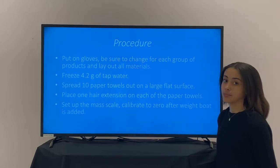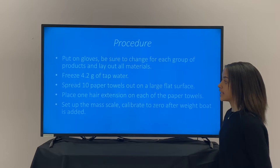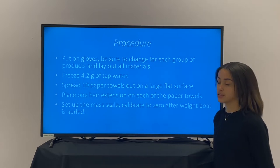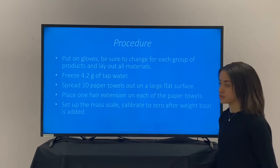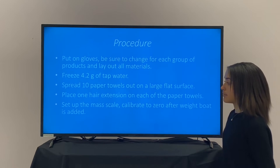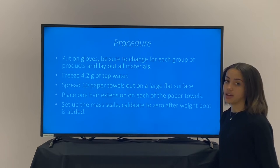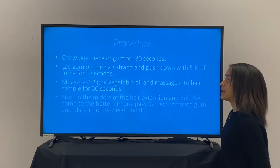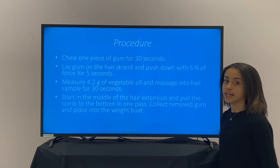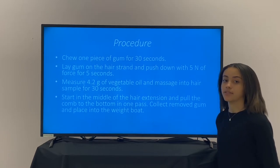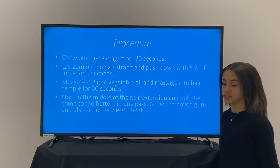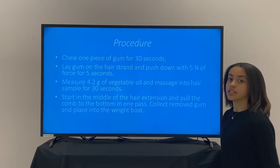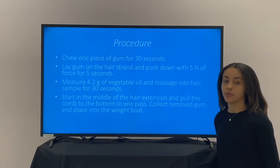During my procedure, first I put on gloves. Second, I freeze tap water into ice. Then I spread out 10 paper towels and placed each hair extension on one of the paper towels. Then I set up my mass scale and calibrate it to zero after the weigh boat is added. Then I chew one piece of gum, lay it on a hair strand, and press down with five minutes of force. Next, I measure out vegetable oil and massage it into the hair sample, starting in the middle of the hair extension and coming all the way down to the bottom in one pass.